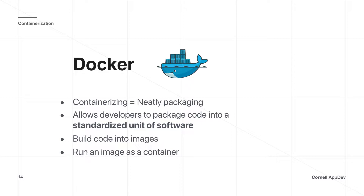The next evolution of environment separation is called containerization, which we do using Docker. A competitor developed by Google is Kubernetes, but this course uses Docker as a simple way to get familiar with containerizing and standardizing applications. Containerizing means neatly packaging software into a bundle. The process involves building code into images — a set of instructions for setting up your environment — and then running them as containers, which are what actually run the application.